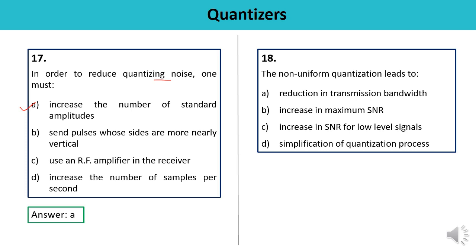Question 18: Non-uniform quantization leads to — reduction in transmission bandwidth, increase in maximum SNR, increase in SNR for low signal levels, or simplification of quantization process? Non-uniform quantization leads to an increase in SNR for low signal levels, because the step size can be varied according to the input signal value. The answer is C — confirmed correct.